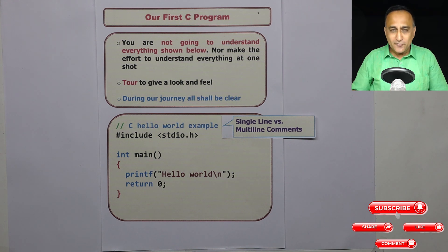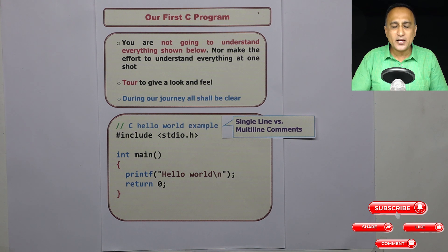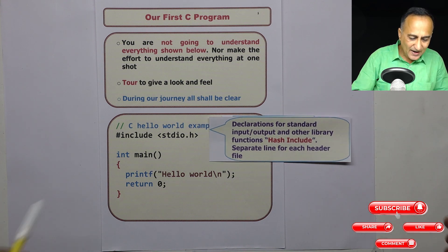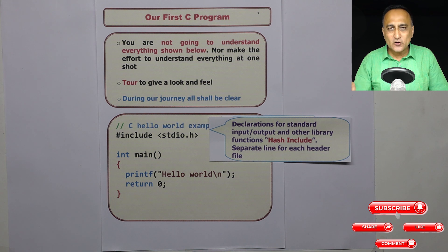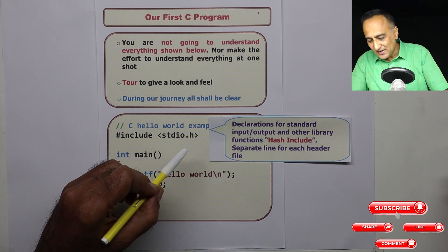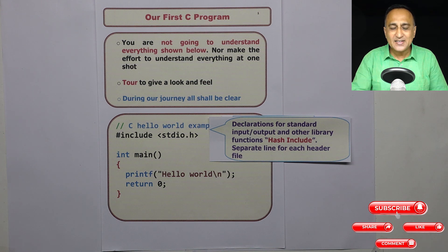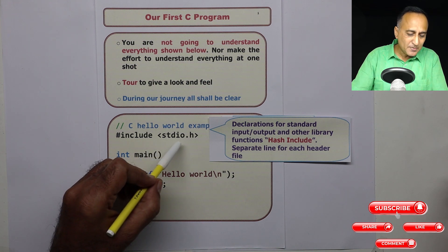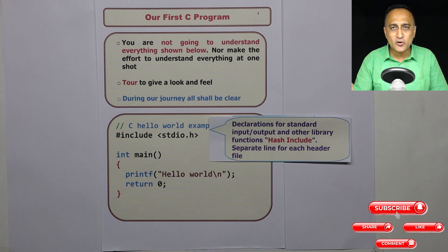In programming, we don't write all the code ourselves. We do not write code for functions like square root or power. For example, to write on the screen we use printf, and to read from the keyboard we use scanf. There is a standard library which provides us those facilities. The hash include stdio.h indicates or informs the compiler that stdio.h contains declarations of standard input/output functions, such as functions for printing something on the screen.